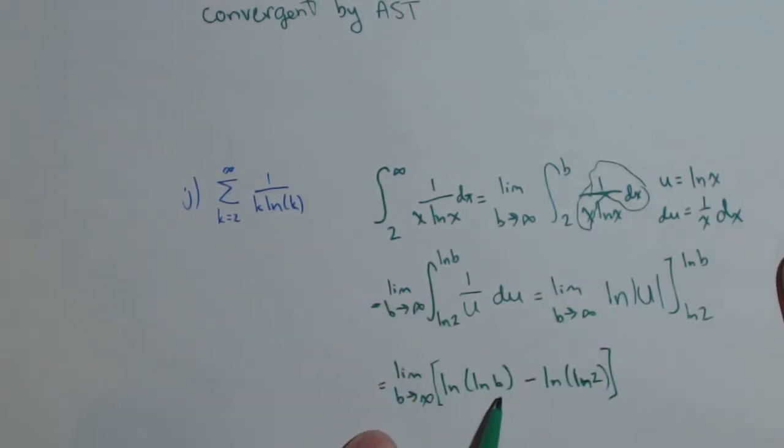Now, the only part that depends on b is this part here, so we need to think about what happens as b goes to infinity. As b goes to infinity, natural log of b goes to infinity.